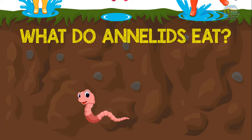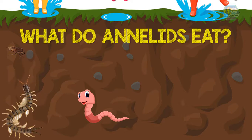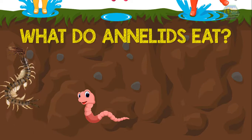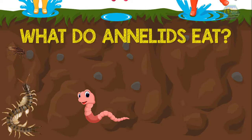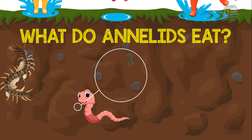So what do annelids eat? Some annelids prey on other small invertebrates. Some live in tubes and emerge just to grab prey with their jaws as they pass by — like a tiger waiting to pounce. Many annelids are detritivores, meaning they feed on sediments and deposits because they contain very small invertebrates and microorganisms.